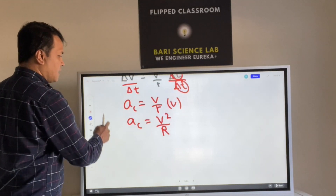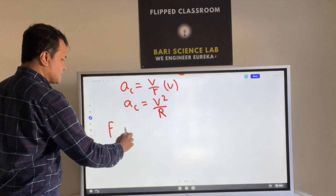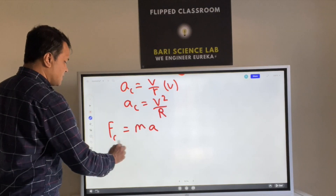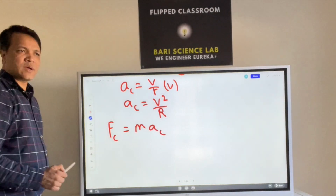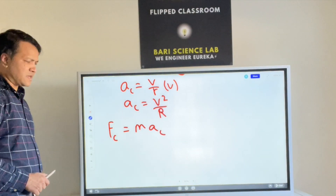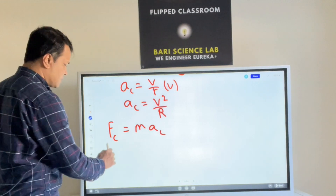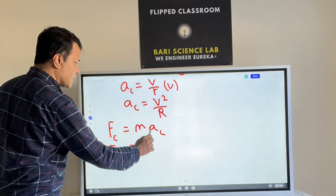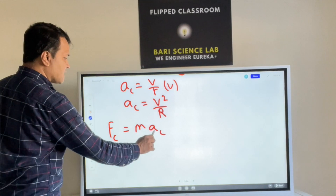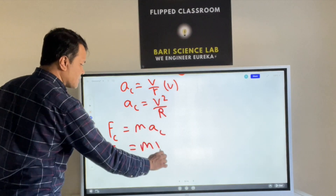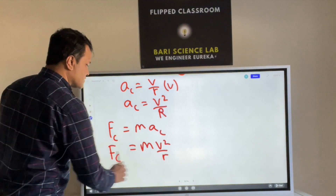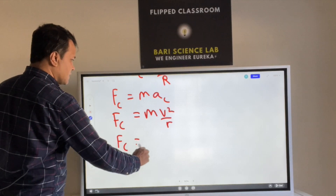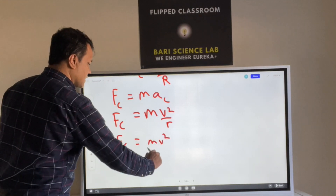Now, force equals m times a. Centripetal force equals m times centripetal acceleration, and centripetal acceleration is v squared over r. Therefore, centripetal force equals m v squared over r.